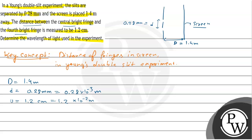The distance from the central bright fringe to the fourth bright fringe means our n is 4. If the distance from the central bright fringe to the fourth bright fringe is y, then y equals n·λ·D divided by small d. Here λ is the wavelength and n is the fringe number. We have to find the wavelength of the light.